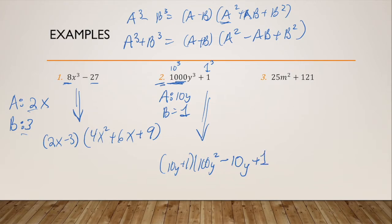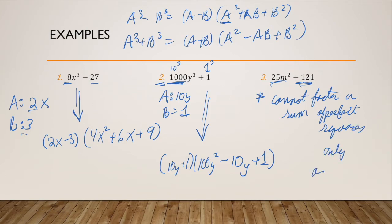So problem three, I've got 25Y² plus 121. Well, think about this. Yes, these are perfect squares, but we cannot factor a sum of perfect squares, only a difference. And let me show you why real quick. We're going to go on a fun little tangent with an easier to look at example.